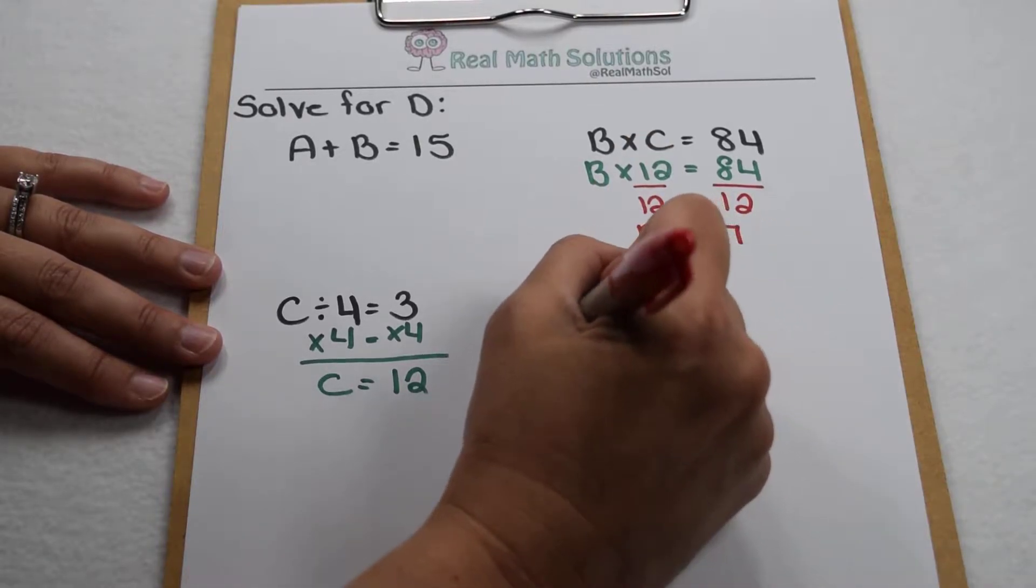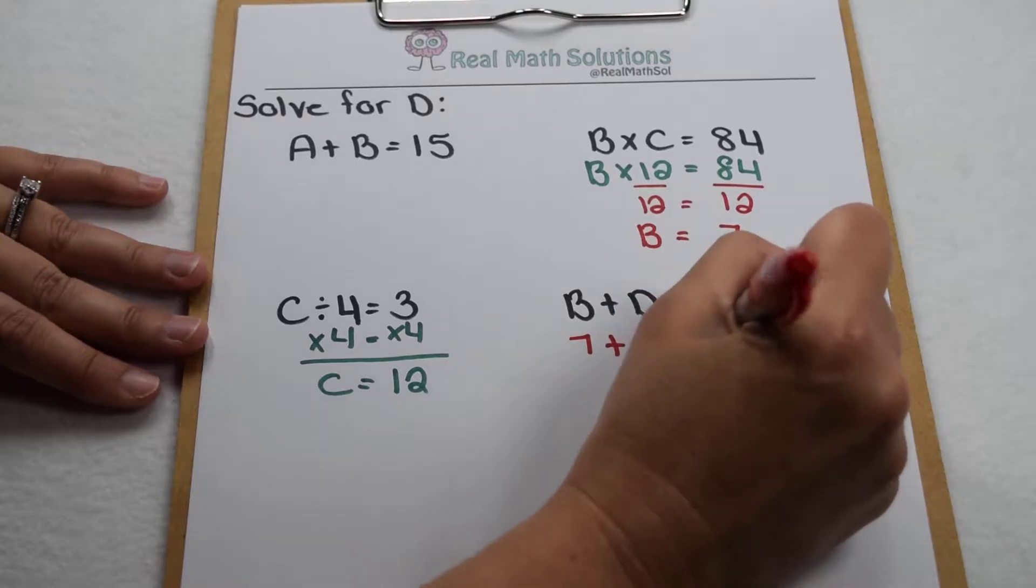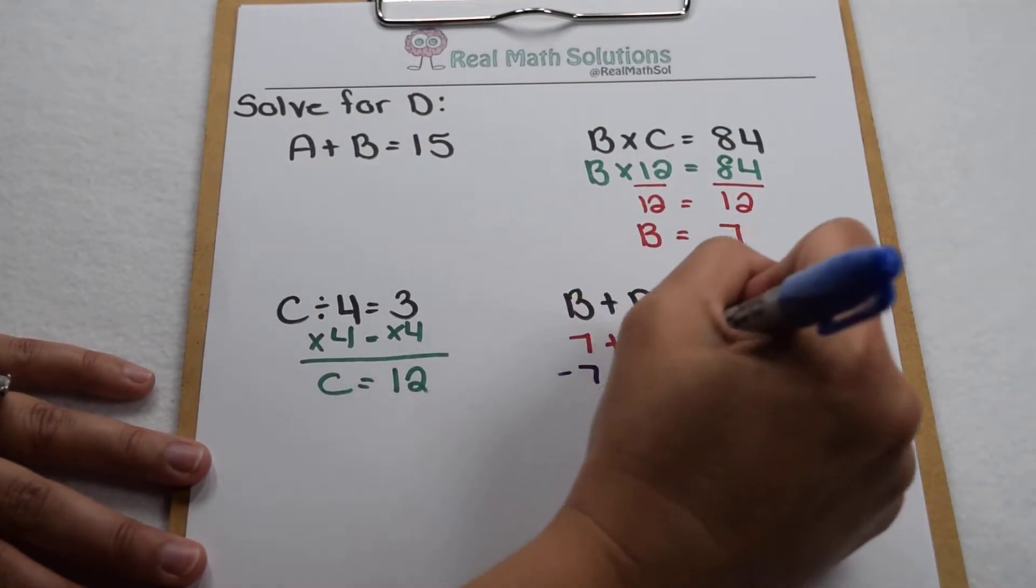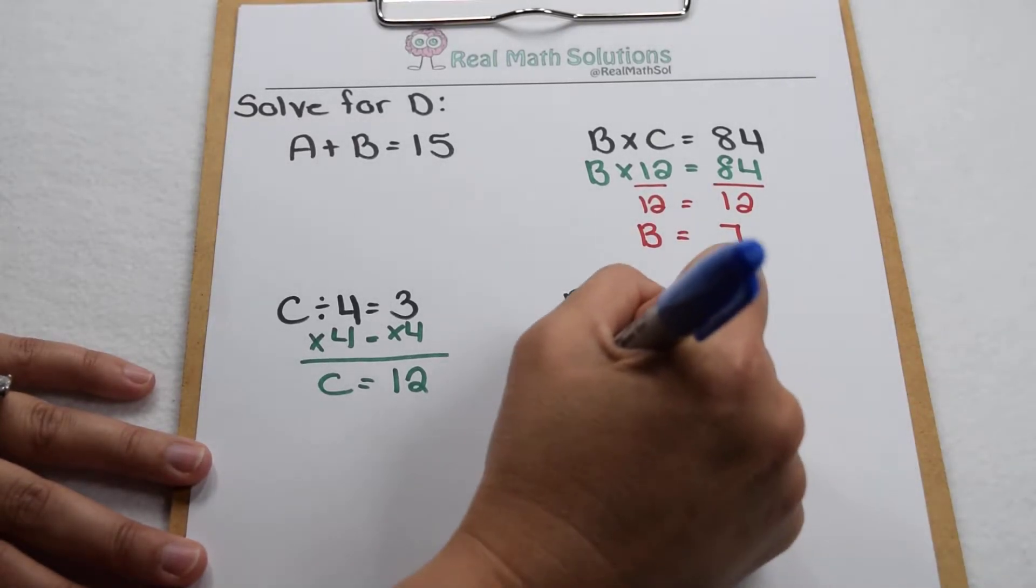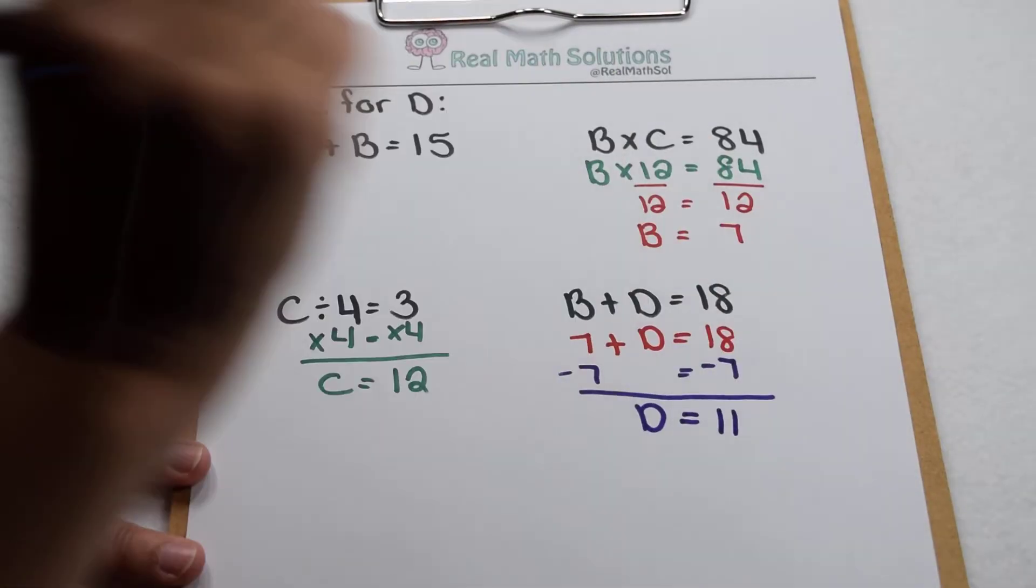So b is worth 7. So that tells me that 7 plus d gives me 18. So again, I can undo by taking away 7 from each side. So when I do, that tells me that d is going to be worth 11.